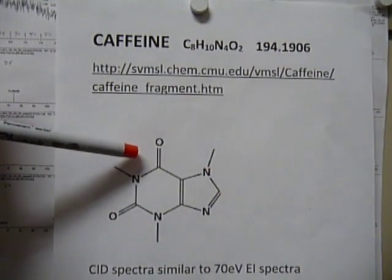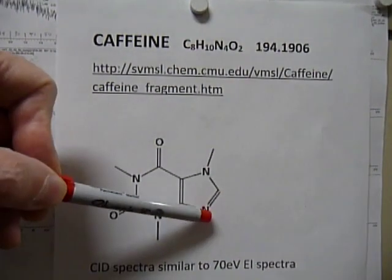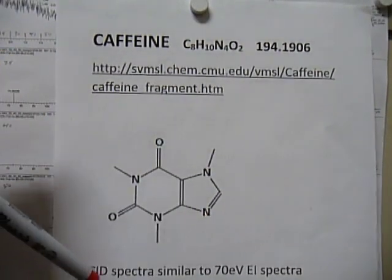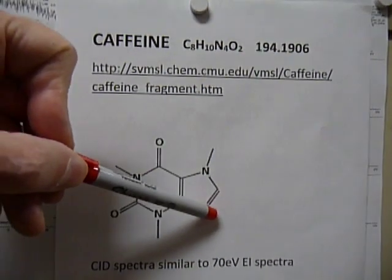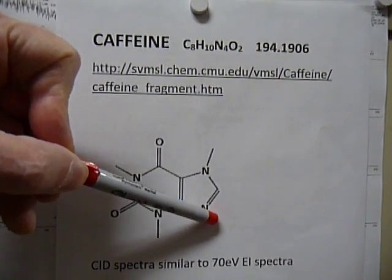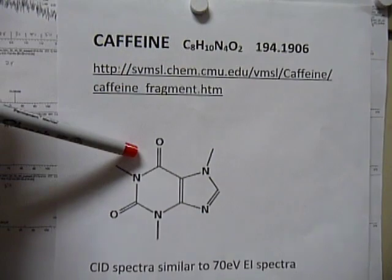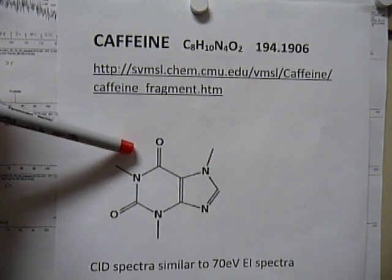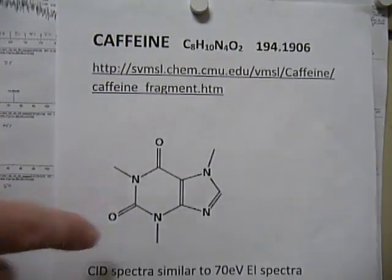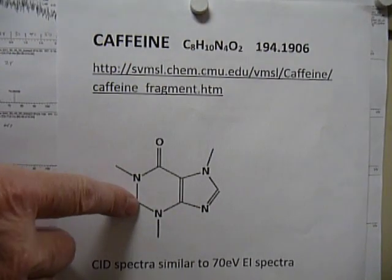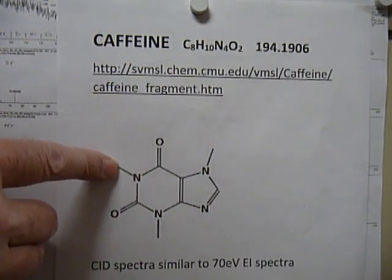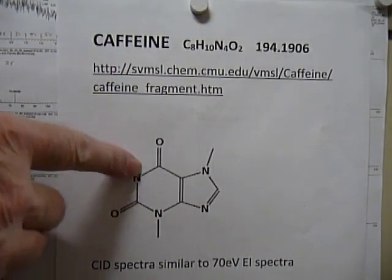Essentially, for that 138. For positive electrospray, we're going to put the proton here. And then the fragmentation occurs by losing this OCNC portion.